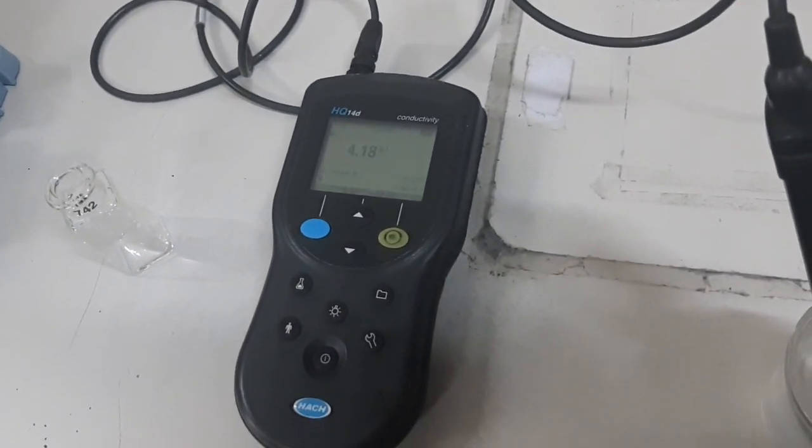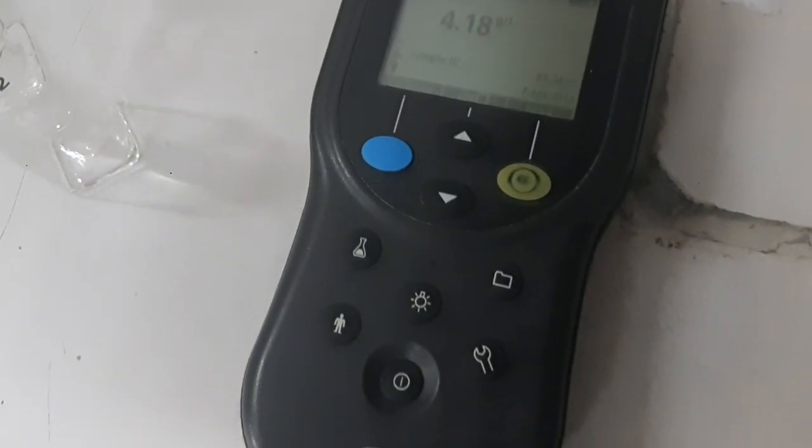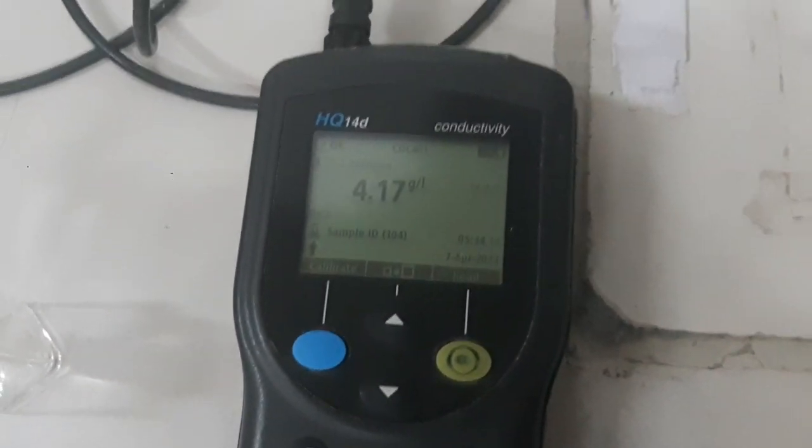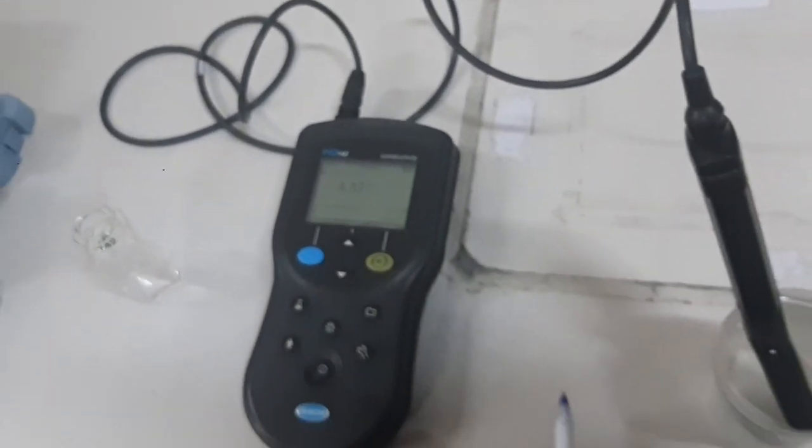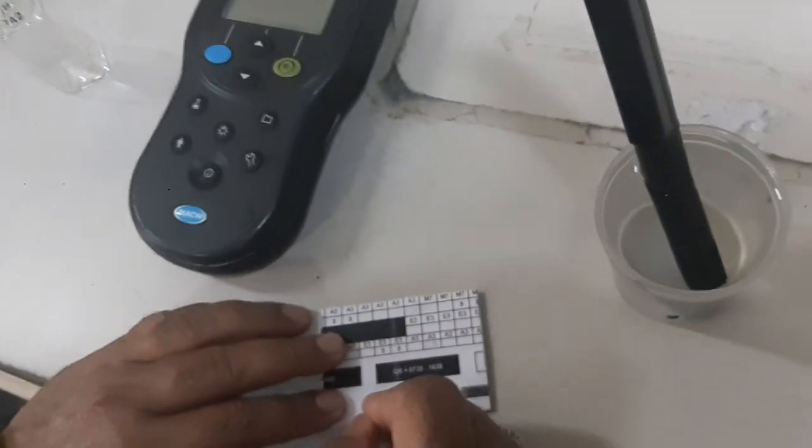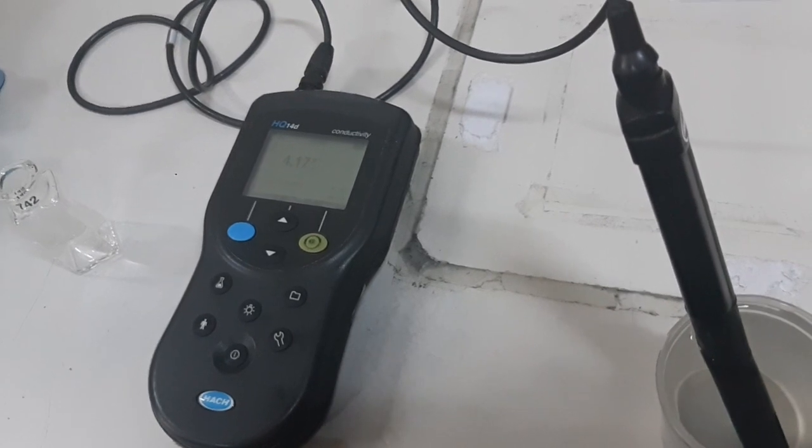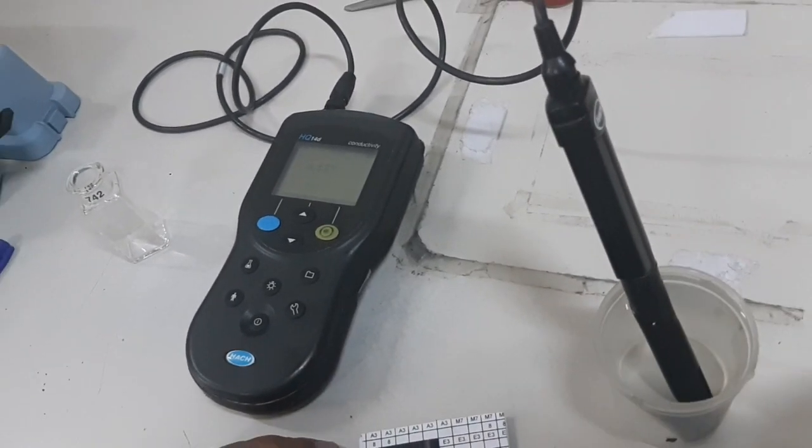Per liter, 4.1 gram per liter multiplied by 1,000, that is 4,100. That is the TDS. The TDS is very high because that is reject water. Very high salinity. There are a lot of minerals in the reject water.